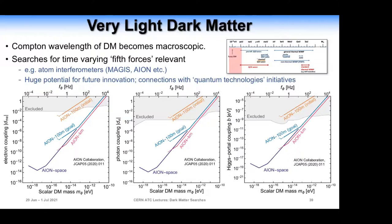I'll finish by talking about very light dark matter, where generically the wavelength of the dark matter is becoming macroscopic. The effect is equivalent to that of a time-varying fifth force, so you can use experiments such as atom interferometers — examples are MAGIS and AION — to look for time-varying signals and give sensitivity to really very low mass dark matter states. There's huge potential for innovation here, particularly because quantum technologies are really growing and well-funded, with relationships to quantum information and quantum metrology. Although this is really just starting out at the moment, I think there will be some really big breakthroughs in the near future.